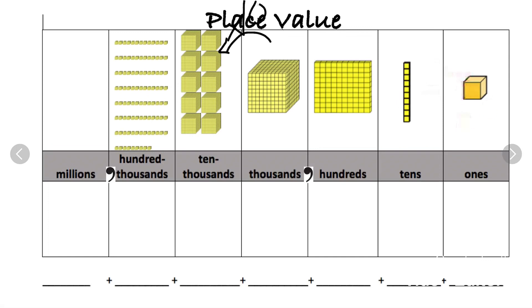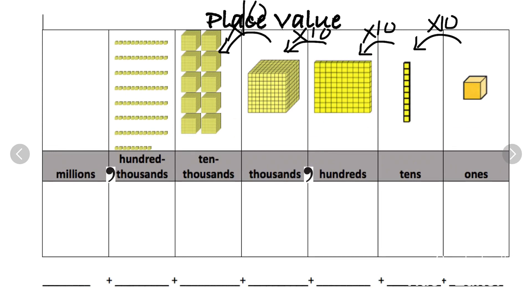It also takes ten ones to make one tens rod, so I'm multiplying by ten to get from ones to tens. Do you see a pattern? Every place value is ten times the one before it. As my place value increases moving left, I'm multiplying by ten every time.